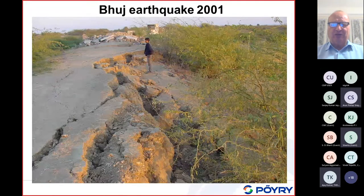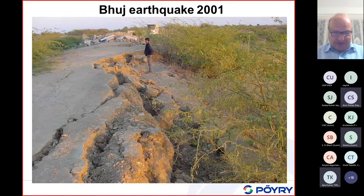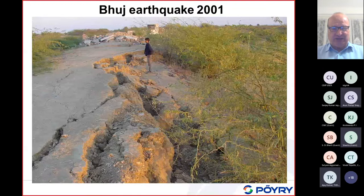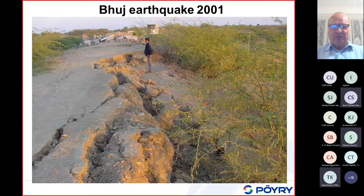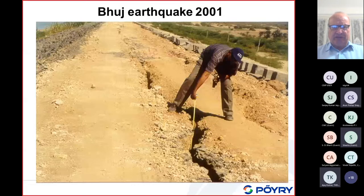I would like to show here some photos which I've shown before. Why am I showing these photos? I'm using the same photos again because there are simply not too many photos available internationally which show important damage to different types of dams. You see here from the Bhuj earthquake an earth dam with large cracks, more or less in the direction of the crest. Again, a longitudinal crack in a crest during the Bhuj earthquake, at another dam site.